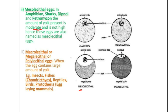This is a mesolecithal egg. Third are the macrolecithal, megalecithal or polylecithal eggs — when the egg contains a large amount of yolk, such eggs are called macrolecithal, megalecithal or polylecithal eggs. Examples include eggs of insects, fishes such as Chondrichthyes (cartilaginous fishes), reptiles, birds and prototherians which are egg-laying mammals.